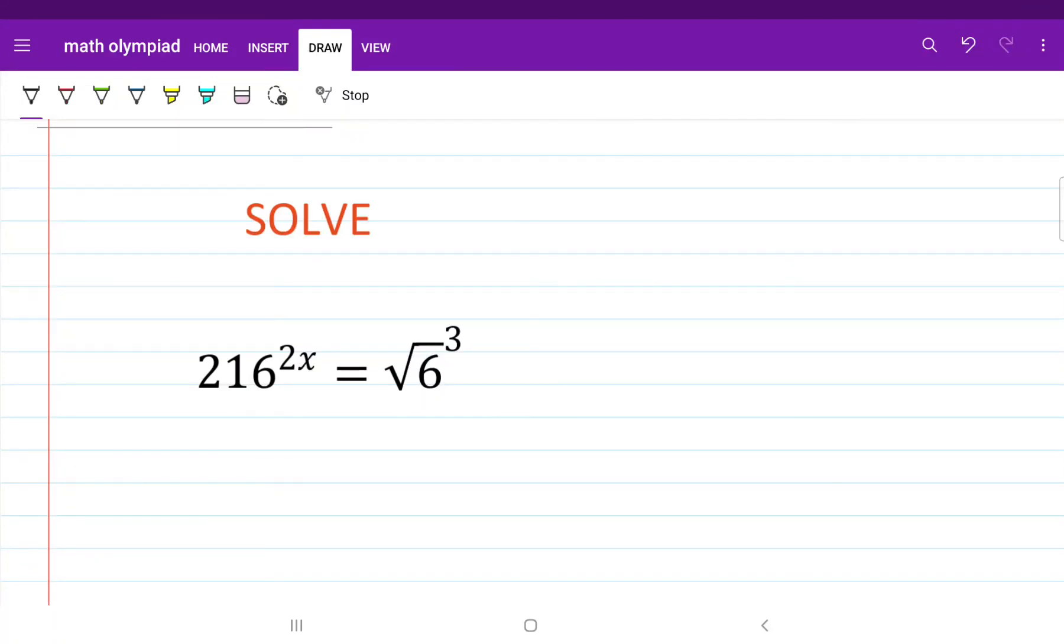Hello everyone, welcome back to MathMind. For today's tutorial, we'll be trying to solve an equation involving exponents. We have 216 to the power of 2x is equal to square root of 6 cubed.